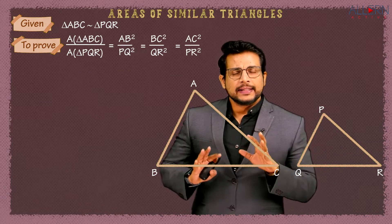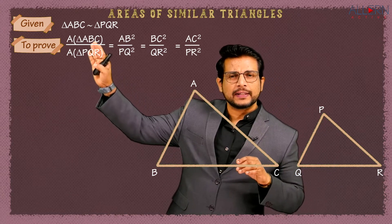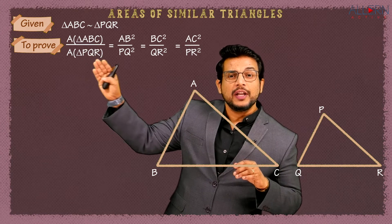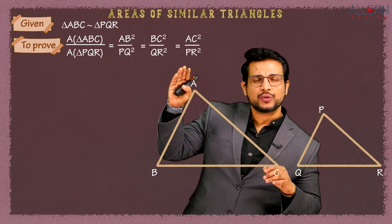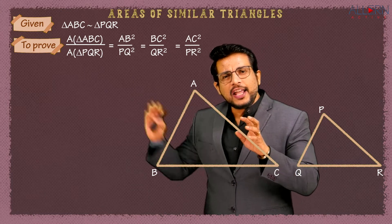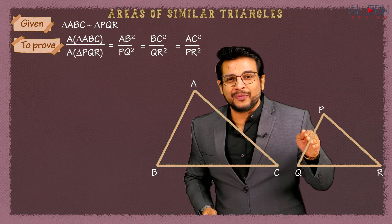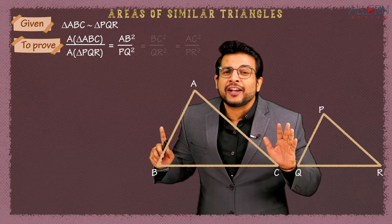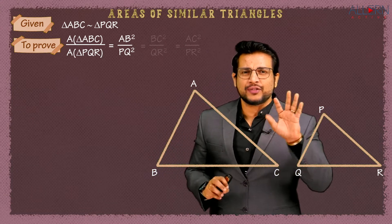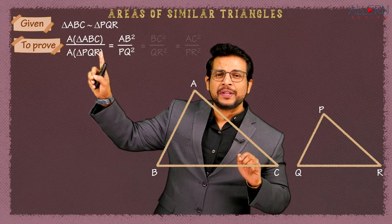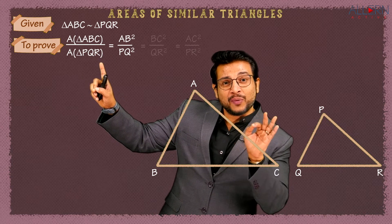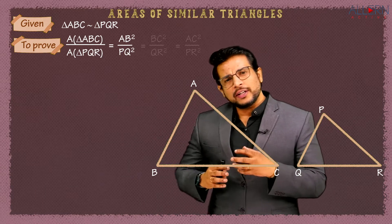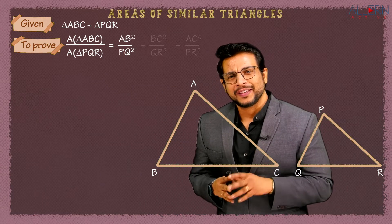Now we proceed further. We are supposed to prove the left-hand side — area of triangle ABC upon area of triangle PQR — equal to those three ratios. But we can't prove all three at once; we prove one at a time. So let's focus on proving area of triangle ABC upon area of triangle PQR equals AB² upon PQ².